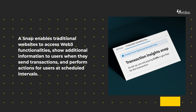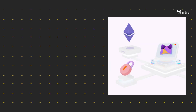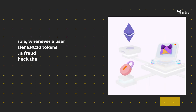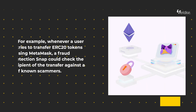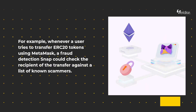A snap enables traditional websites to access Web3 functionalities, show additional information to users when they send transactions, and perform actions for users at scheduled intervals. For example, whenever a user tries to transfer ERC20 tokens using MetaMask, a fraud detection snap could check the recipient of the transfer against a list of known scammers.